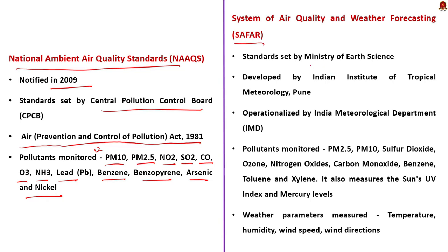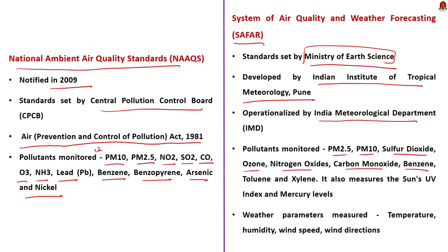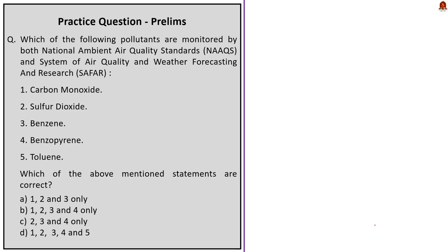SAFAR standards are set by the Ministry of Earth Sciences. SAFAR was developed by the Indian Institute of Tropical Meteorology, Pune and operationalized by the Indian Meteorological Department. In addition to regular air quality parameters like PM2.5, PM10, Sulphur Dioxide, Ozone, Nitrogen Oxides and Carbon Monoxide, SAFAR also monitors benzene, toluene and xylene. It also measures the sun's UV index and mercury levels, as well as weather parameters like temperature, humidity, wind speed and wind direction. Carbon Monoxide, Sulphur Dioxide and Benzene are monitored by both NAAQS and SAFAR. Benzopyrene is monitored only by NAAQS, and toluene is monitored only by SAFAR. The correct answer is option A — 1, 2 and 3 only.